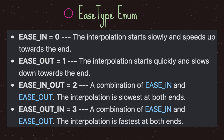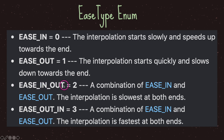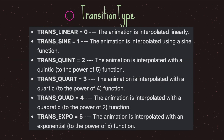The ease type enum has four values: ease_in starts slowly and speeds up towards the end; ease_out is the opposite — starts quickly and slows down. Ease_in_out combines both: starts slowly and slows down towards the end. Ease_out_in is the reverse: starts quickly and speeds up towards the end.